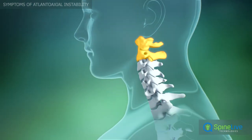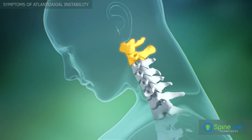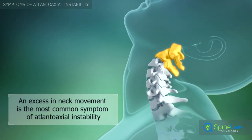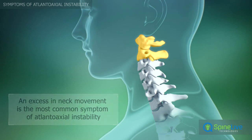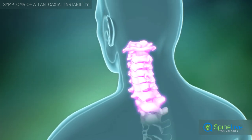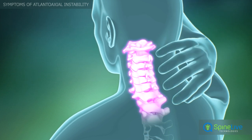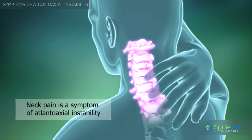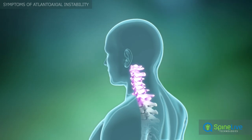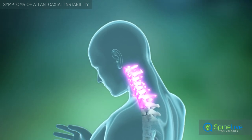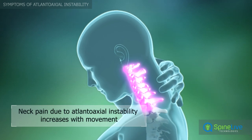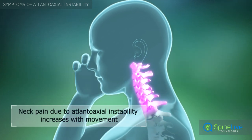The most common symptom of atlantoaxial instability is an excess in movement of the cervical region of the spine. Neck pain due to atlantoaxial instability occurs when the spinal cord or its nerves are affected. Usually, neck pain due to atlantoaxial instability increases with movement and is relieved by rest.